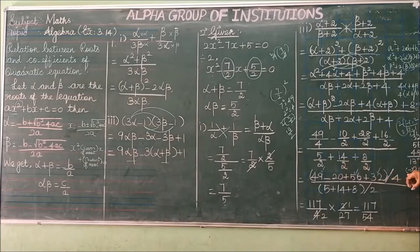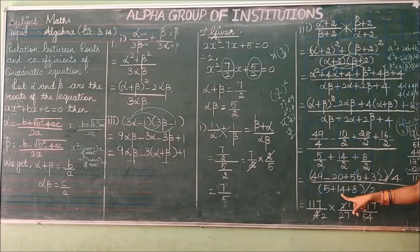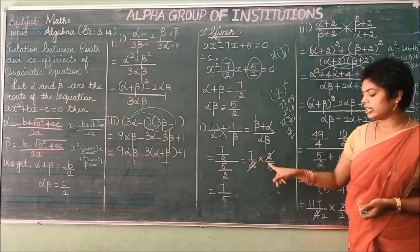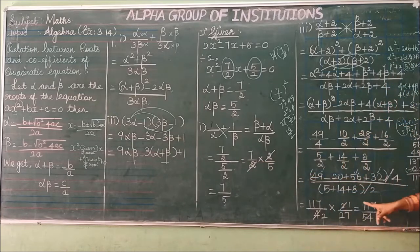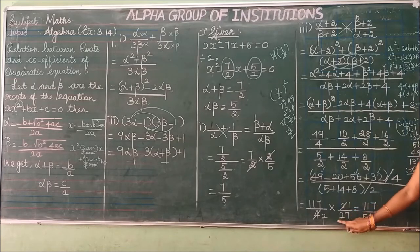Subtract 20: 137 − 20 = 117. Denominator: 5 + 14 + 8 = 27. So the expression equals 117/4 divided by 27/2, which becomes (117/4) × (2/27). The 4 and 2 cancel giving a factor of 2, so 117 / (2×27) = 117/54. This is the final answer.